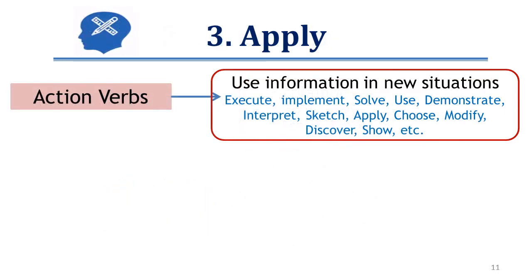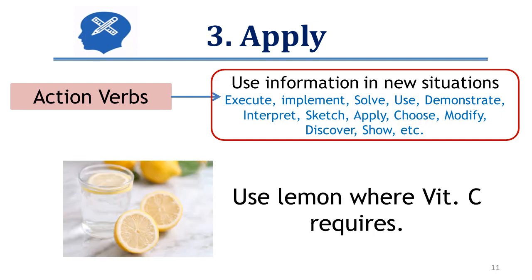Developing the ability to use learned information in a new situation is the apply level. Action verbs include execute, implement, solve, use, demonstrate, apply, choose, and others. For example: use lemon where vitamin C is required.